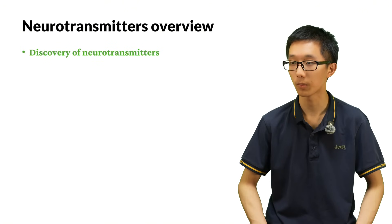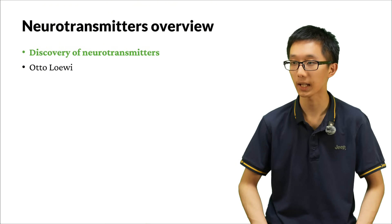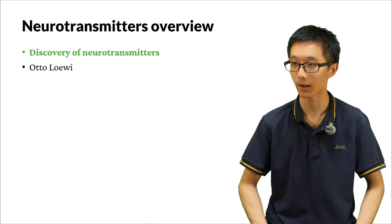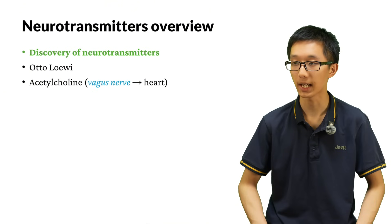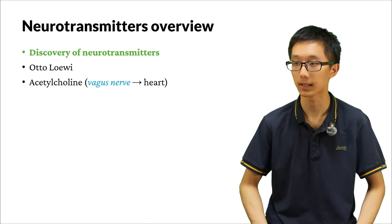How were neurotransmitters discovered? They were discovered by a scientist called Otto Loewi — believe it or not, in the heart of frogs. The first neurotransmitter discovered was acetylcholine. It was discovered at the end of the vagus nerve, which innervated the heart. The vagus nerve connects to the heart, and when the vagus nerve is activated, the heart's beating becomes slower.